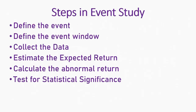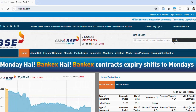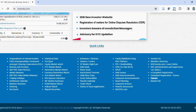So the event is the Union Budget announcement, and the event day is February 1st. Let's follow the steps: first, define the event — it is the Union Budget announcement. Now let's collect the data. I'll take you to the BSE website — Bombay Stock Exchange — where you can collect historical stock prices. On the home page, scroll to the bottom where you'll find a list of items including historical data.